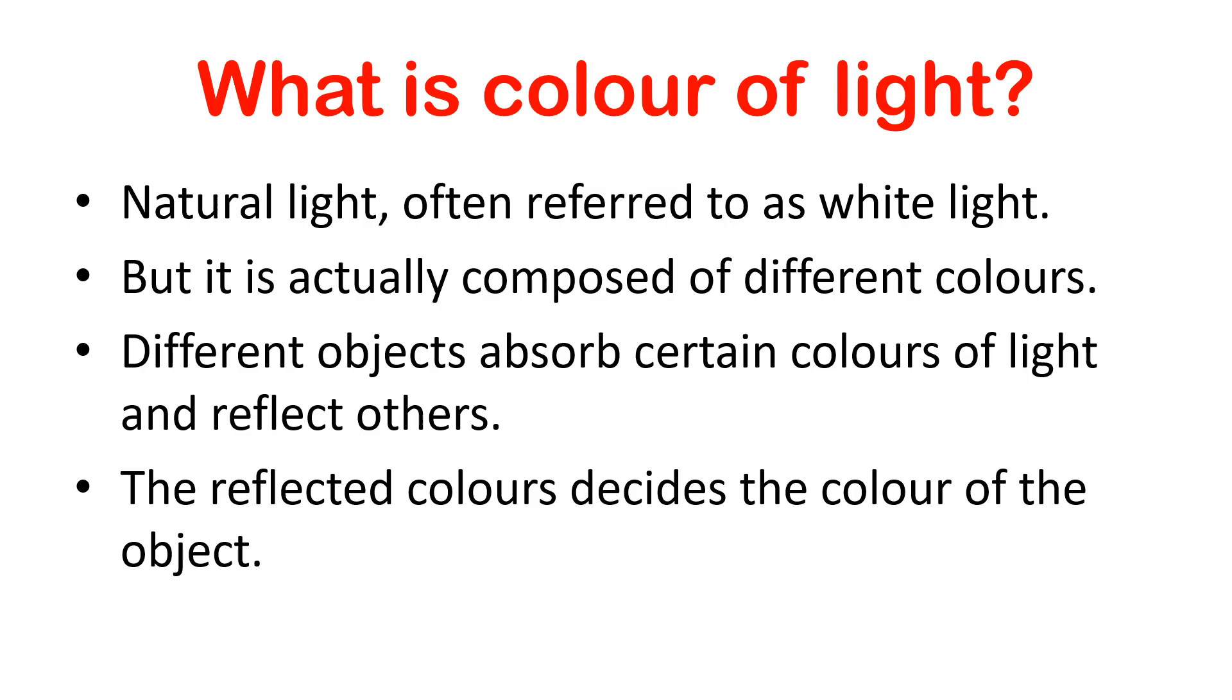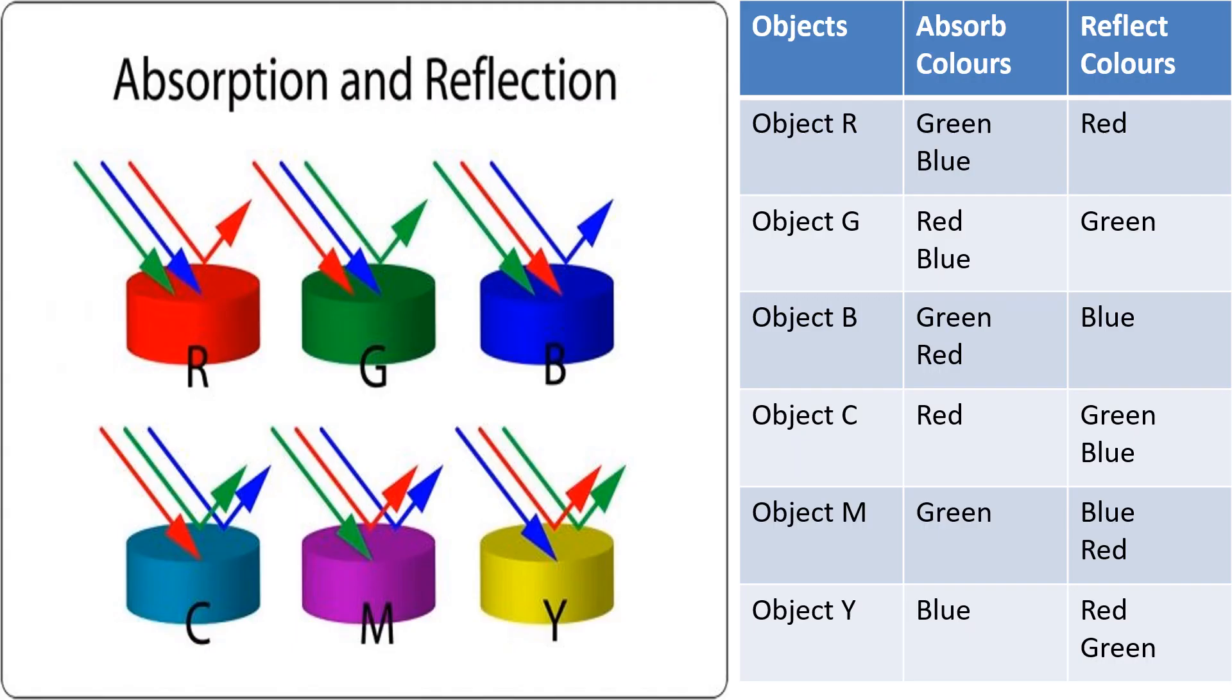We understand this with the help of this chart. Absorption and reflection: Object R absorbs green and the blue color and reflects red color, and it appears to us as red. In the same way, object G absorbs red and blue color and reflects green color.